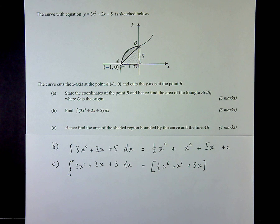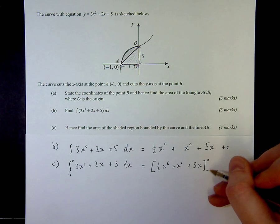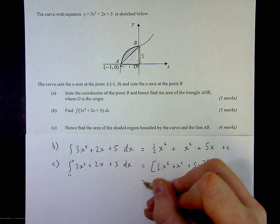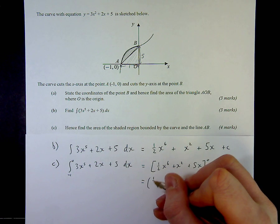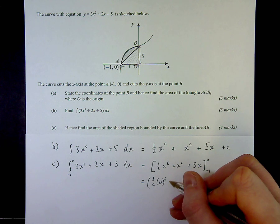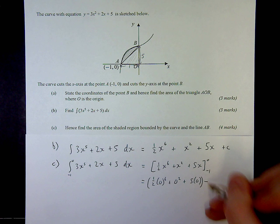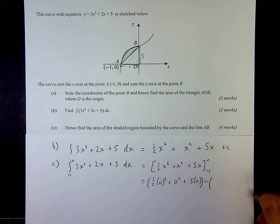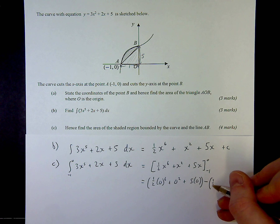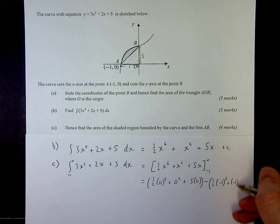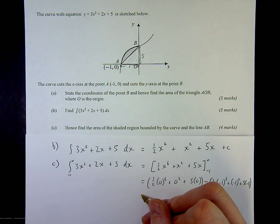So all I need to do is substitute that in. Subbing the 0 first of all, we're going to get 0 cubed plus 0 squared plus 5 times 0, which is pretty straightforward. And then subtract the second substitution with minus 1 in, so it's going to be minus 1 cubed plus minus 1 squared plus 5 times minus 1.